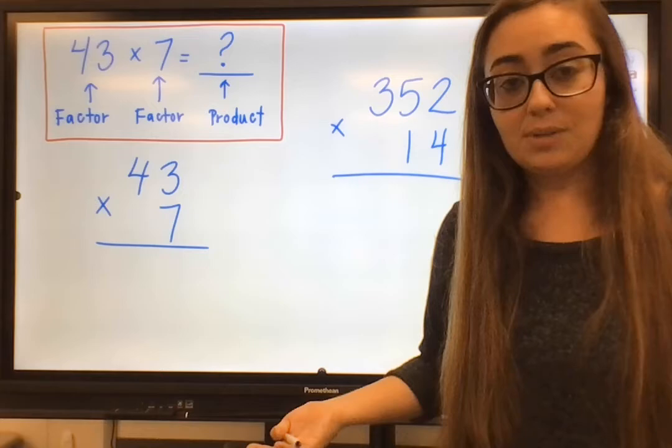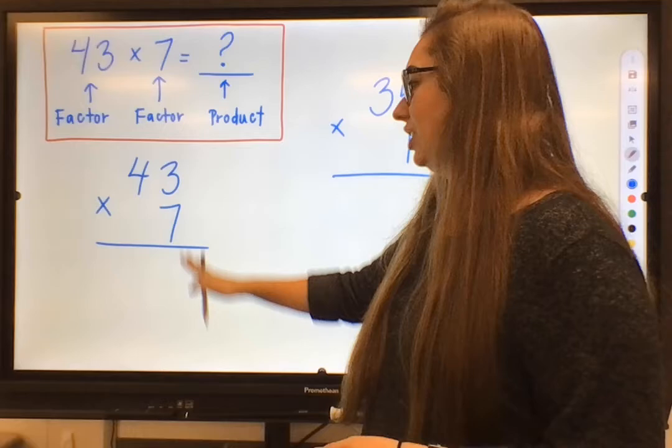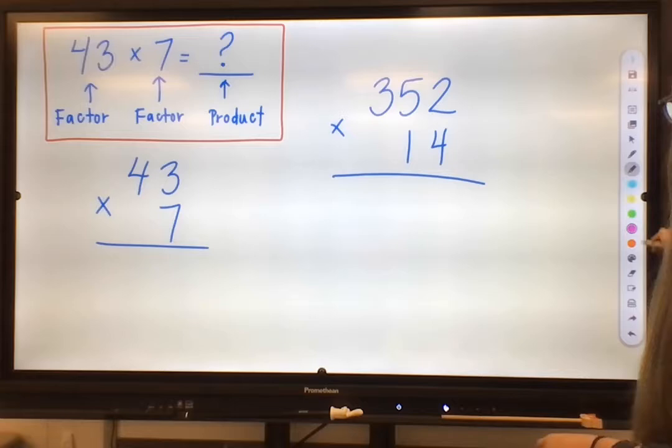Now we'll start off with our standard algorithm. This is probably the method that you're the most familiar with. Basically you are just multiplying it in pieces and chunks. You start with your bottom digit on the far right corner and you're multiplying upwards from right to left.